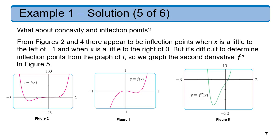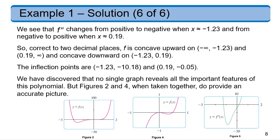And again, what does it tell us? Well, we see that the second derivative changes from positive to negative at about negative 1.23, and then it comes back from negative to positive at about 0.19.